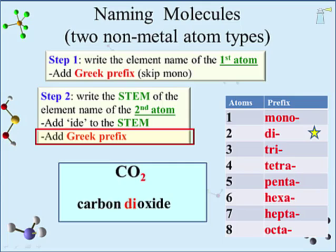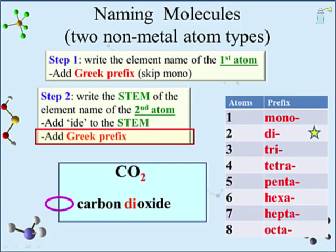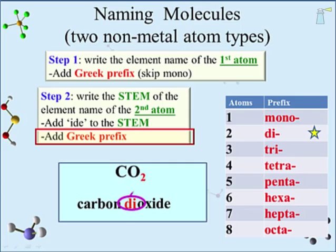What if we were given the name 'carbon dioxide' and wanted to get the molecular formula? The reverse of these steps works. The first element is carbon — in the molecular formula, we start with the symbol C. An absence of a Greek prefix means it is mono, so the subscript for C is 1, which is implied and not written. The second name tells us the second element is oxygen — O follows the C. The prefix 'di' is associated with the number 2, put as a subscript to the O, giving CO₂.